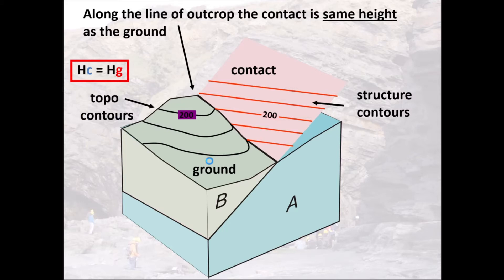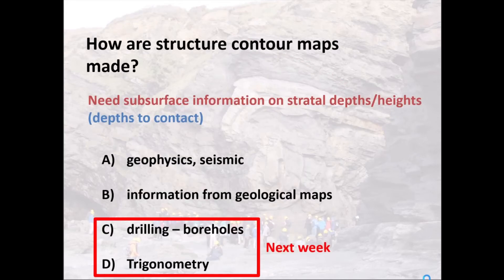If you were to draw contoured surfaces for these things, you might end up with curvilinear contours for the topography — the ground surface — and red lines for our structural contours. You can see that our structural contour, say the 201 here, intersects the 201 topographic contour at the contact for the ground surface.